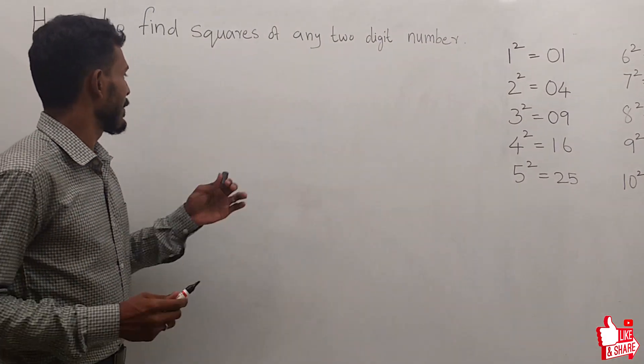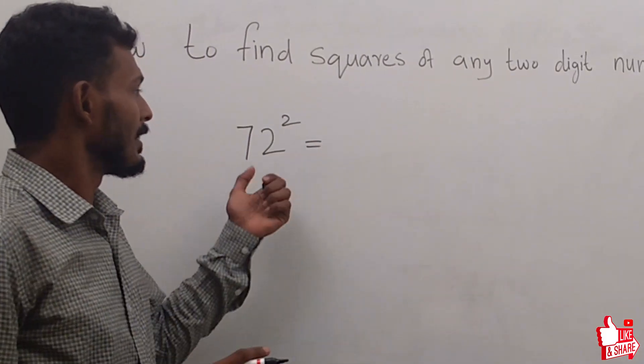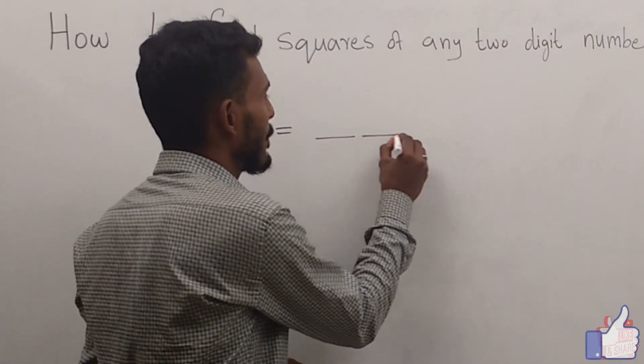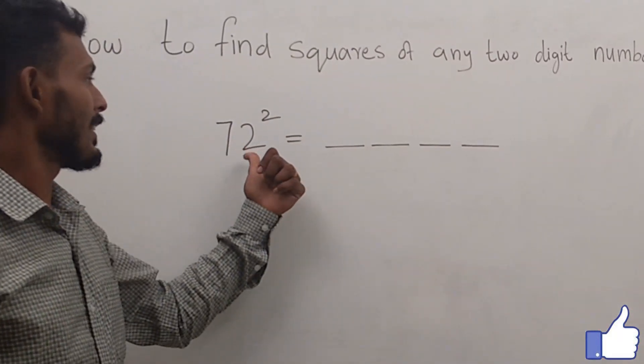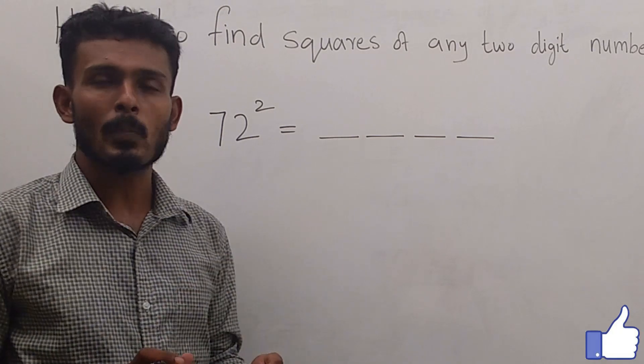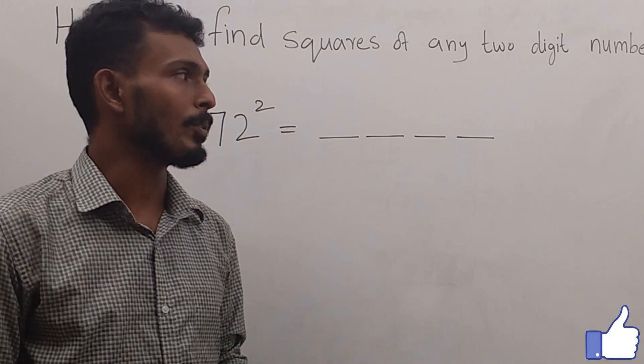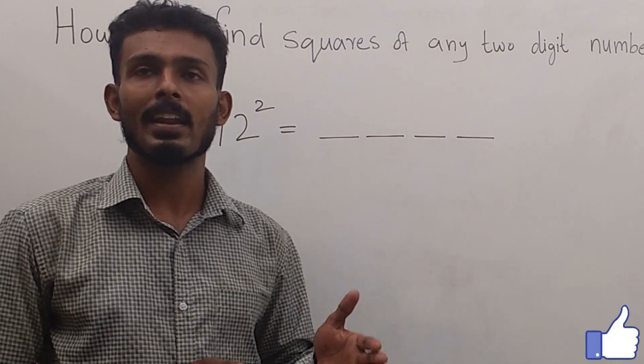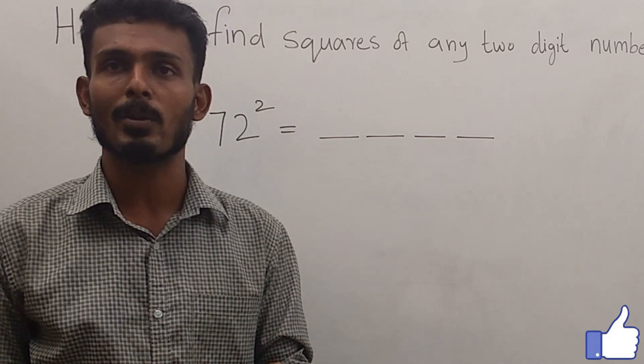For example, we can find 72 square. We can find four places, four dashes. From this, we can use a plus b the whole square form. The formula is a square plus 2ab plus b square.